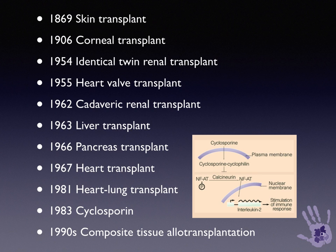Looking at the history of transplantation: the first skin transplants were done in the 1860s, corneal transplantation in 1906, the first solid organ transplant between two identical twins in 1954, heart transplants in 1955, cadaveric renal transplantation in 1962, liver transplant in 1963. The biggest stride forward came after the discovery of cyclosporine in 1983, which made solid organ transplantation almost a mainstream surgical reconstructive technique.